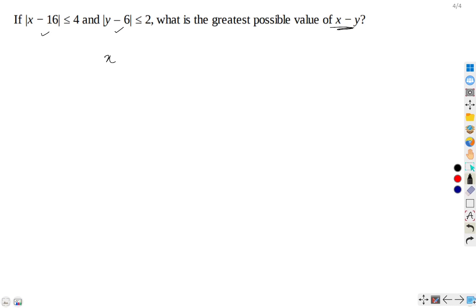We have |x - 16| ≤ 4, and what does it imply? It implies that x - 16 ≤ 4, but greater than equal to -4.